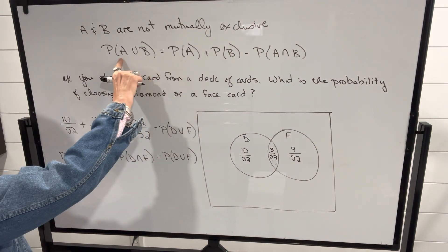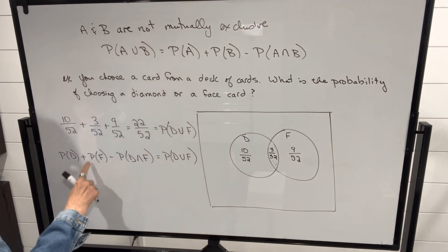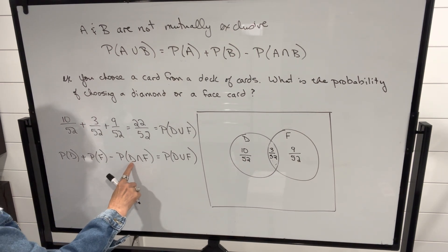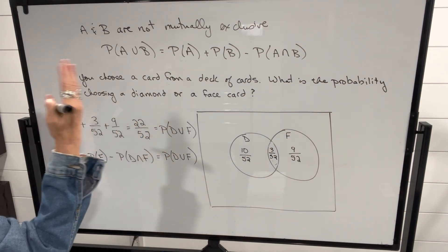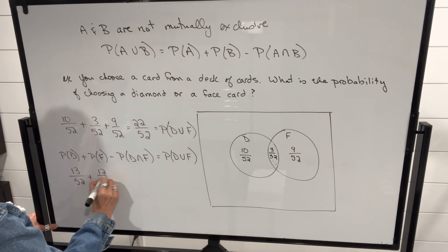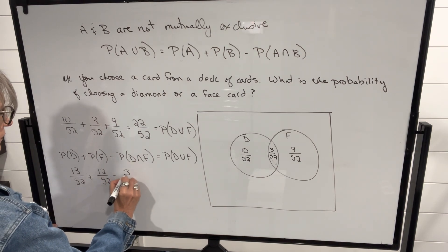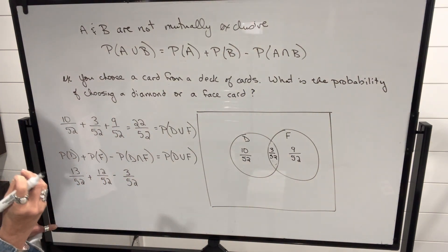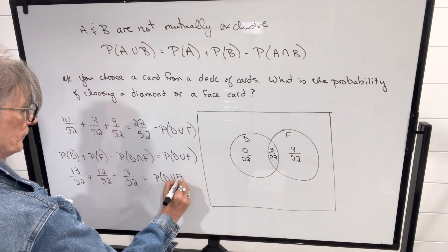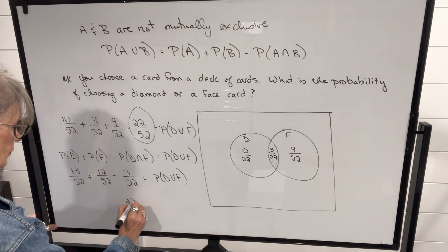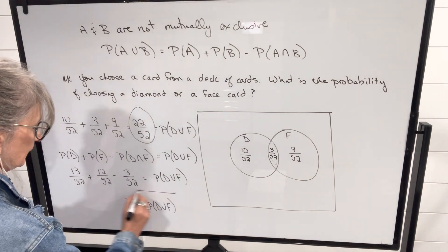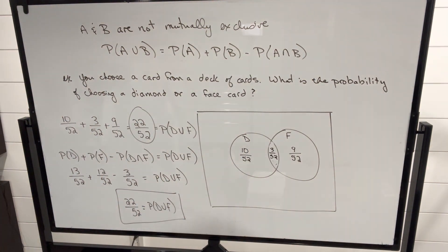If I use the formula to find the probability of a diamond or a face card, I get: probability of a diamond plus probability of a face card minus probability of a diamond and face card. Using the values I obtained, that's 13/52 plus 12/52 minus 3/52, because we don't want to count the Jack, Queen, and King of diamonds twice. That gives 22/52 — the same value as before. So it's another way of calculating or showing the probabilities, and we can use either the formula or the Venn diagram.